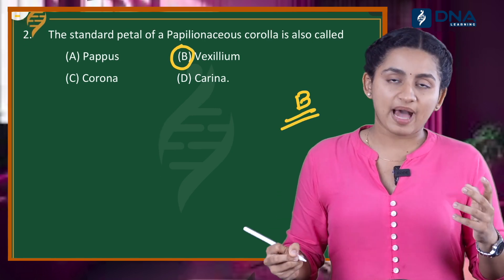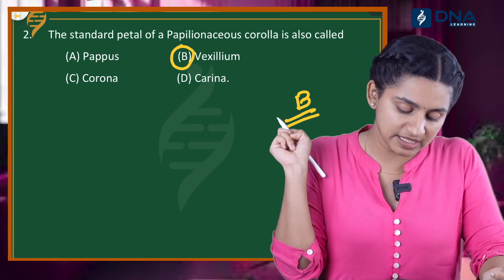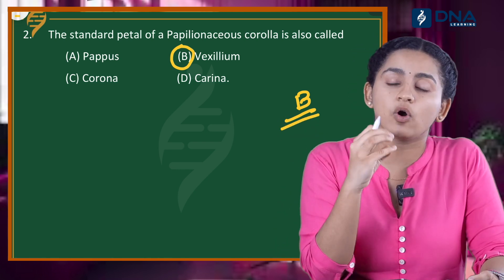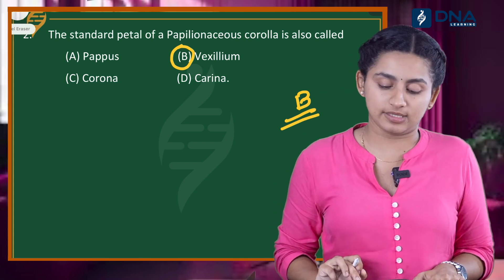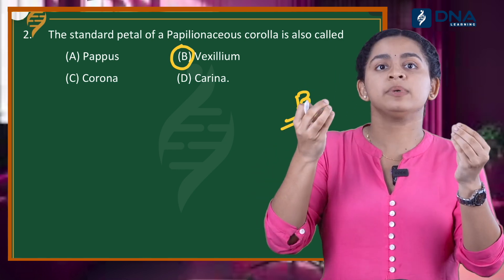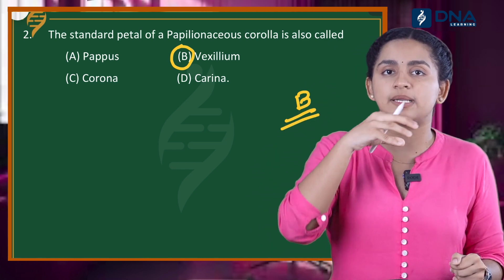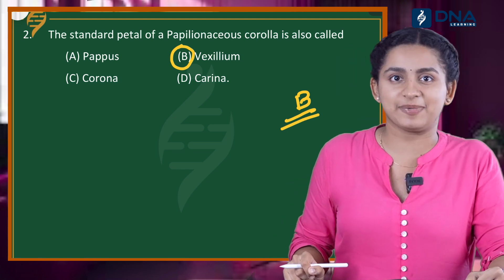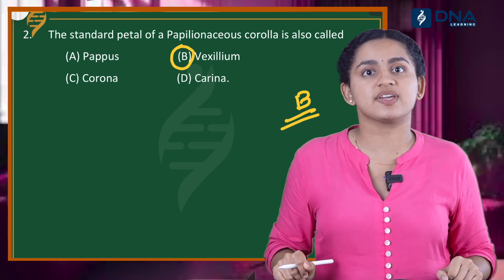Option B is correct. Pappus is called modified calyx. Our answer for question 2 is Option B, vexillum. Vexillum is called a large petal.